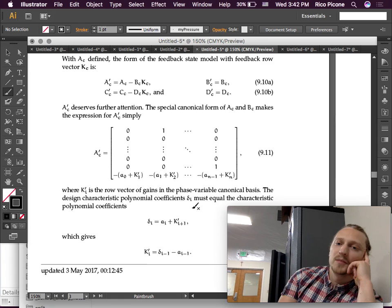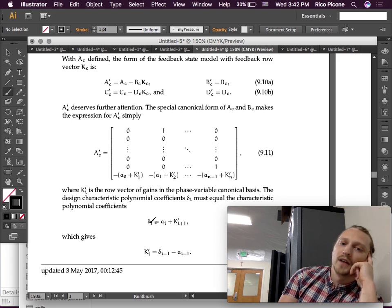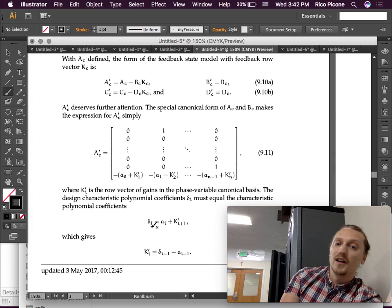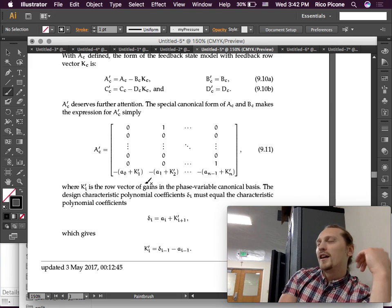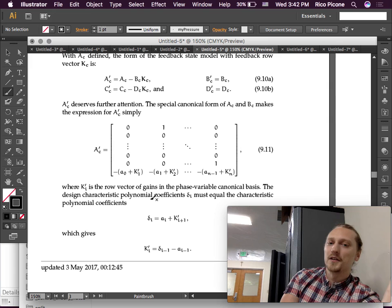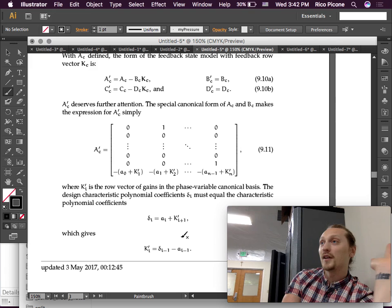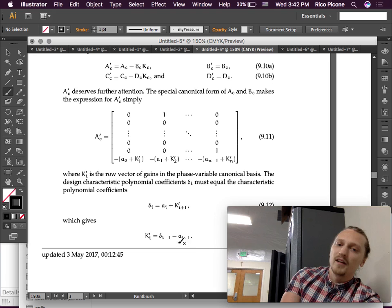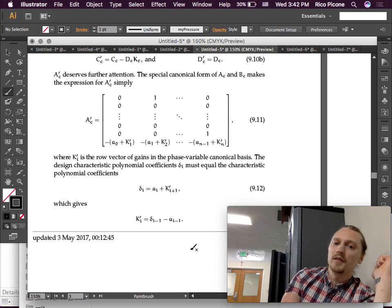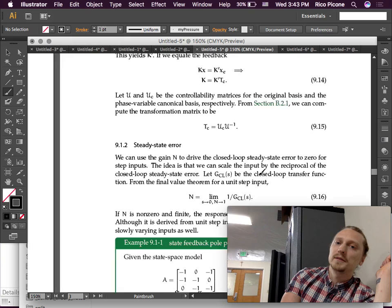The design characteristic polynomial coefficients, delta I, must be equal to the characteristic polynomial coefficients. So, we know delta I, which is stuff that we specify. Those are things, those are nodes. That's to be equal to each of these values, which means that we can solve really easily in each equation, they're all decoupled. If you don't put it in this form, you're going to end up with this massive system to untangle of these coefficients. The way that you do it in phase variable canonical form, it ends up just being this simple subtraction to solve for each variable, which is really nice. So, conveniently, each KI prime is equal to delta I minus 1 minus AI minus 1. So, that is the formula for all of the gains in the primed variable.